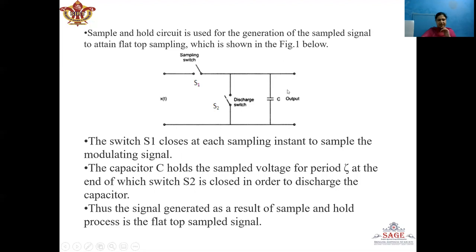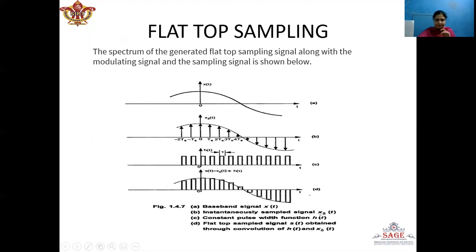The flat top sample voltage across the capacitor reduces instantaneously to zero when S2 closes, generating the flat top sample signal. We can see the message signal, the instantaneous sample signal, the periodic train of pulses, and the flat top sample signal, which is given by the convolution of the instantaneous sample signal and the non-priodic pulse H(T).